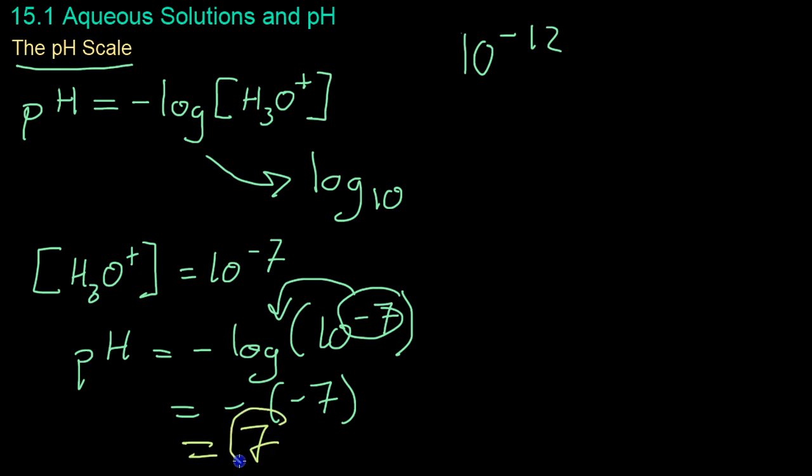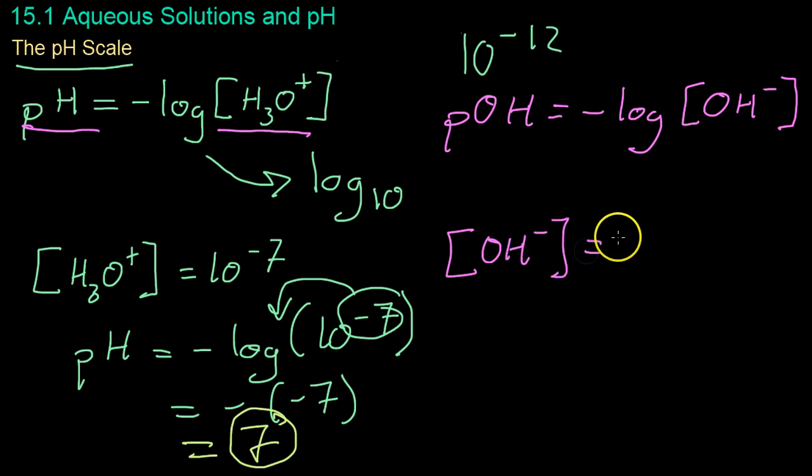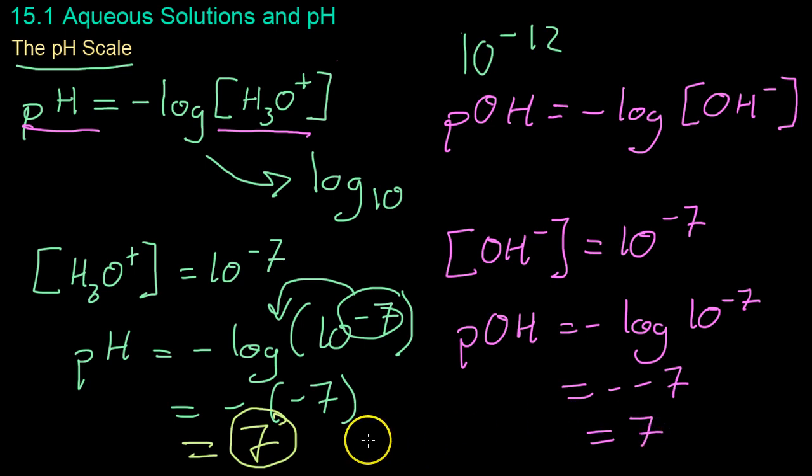Just as there's the pH scale for concentration of hydronium ions, chemists created the pOH scale, which is defined as the negative of the log of the concentration of hydroxide ions. If you take the hydroxide content of neutral water, which is 10 to the negative 7, just as it was with hydronium, then you get a pOH of negative log of 10 to the negative 7. The 7 comes down once again. You get negative negative 7, or 7.